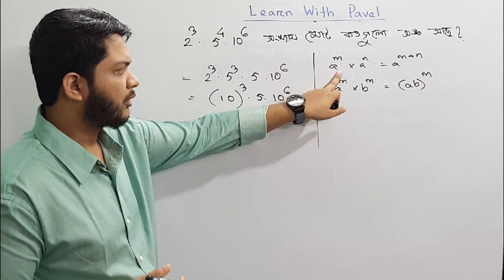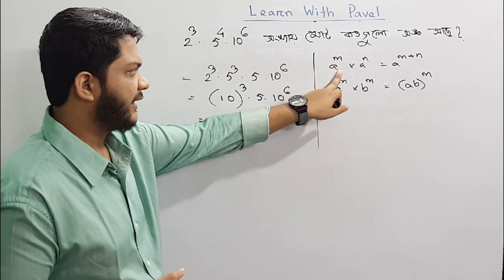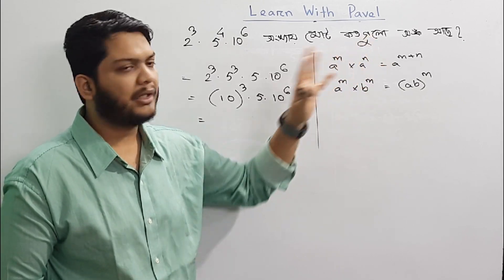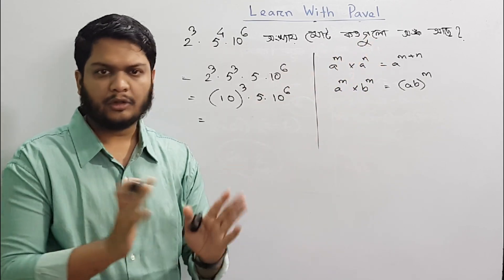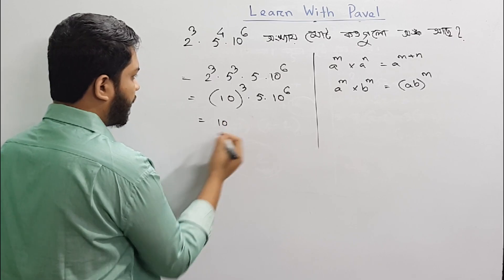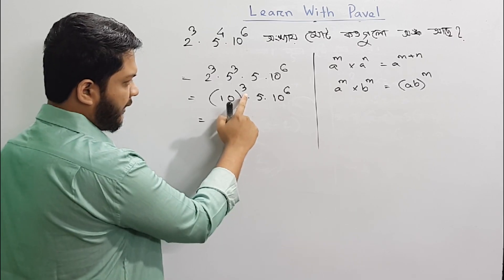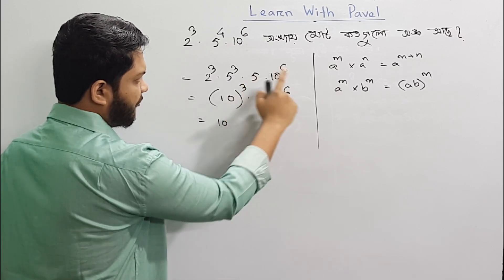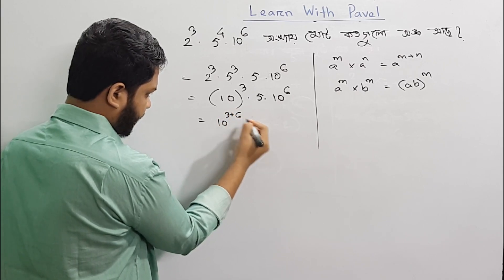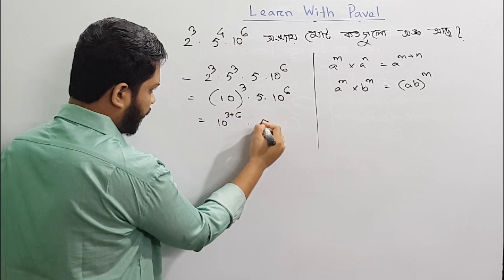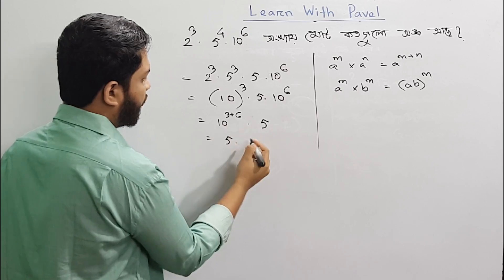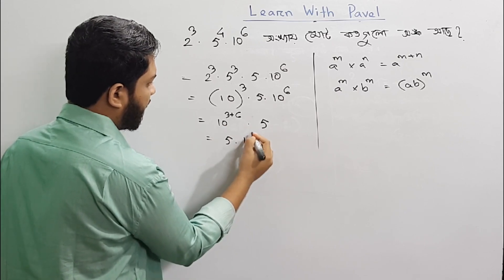I have to show you the best base. This is the best base. 10 to the power 3 plus 6 gives us the exponent, into 5 into 10 to the power 9.